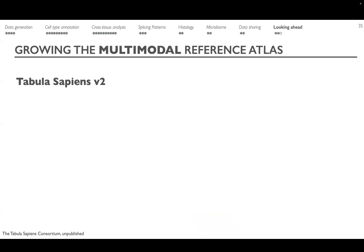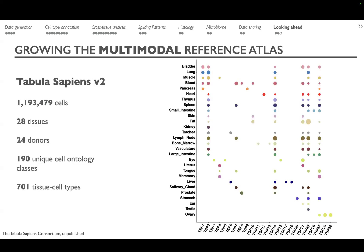With this in mind, for Tabula Sapiens specifically we are growing the multimodal reference atlas — Tabula Sapiens v2 (currently unpublished, hopefully coming out soon). In v2, we have more than doubled the number of cells, added new tissues going from 24 to 28, and increased donors from 15 to 24. We had 475 tissue cell types and now have 701, out of which 190 are unique cell ontology terms — a really large catalog.